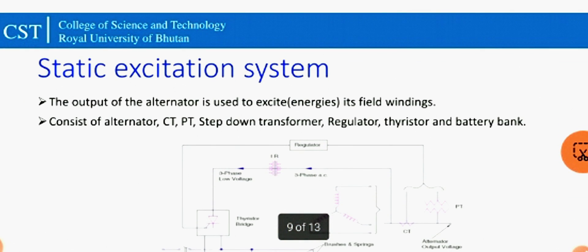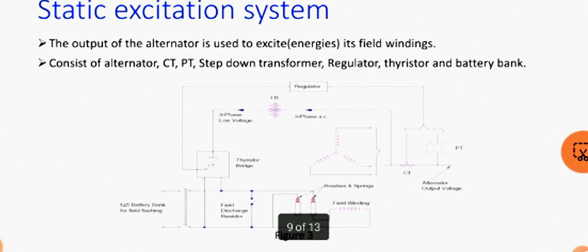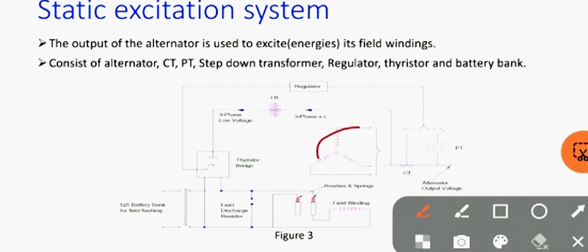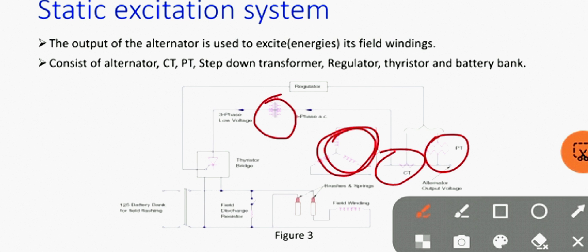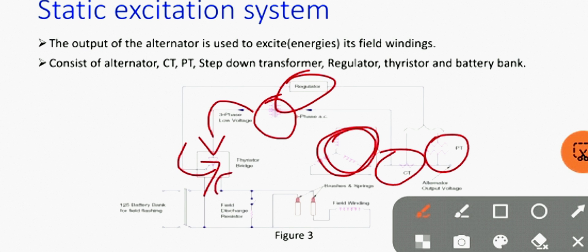The second one is the static excitation system. It consists of CT, PT, step-down transformer, regulator, thyristor bridge, battery bank, and the alternator. One of the outputs of the alternator is connected to the CT, PT, and step-down transformer. From here, the output is given to the thyristor bridge. The CT, PT, and regulator are used to tailor the thyristor bridge to provide the firing angle. From the thyristor bridge, the output goes to the field winding of the alternator through brushes and slip rings.